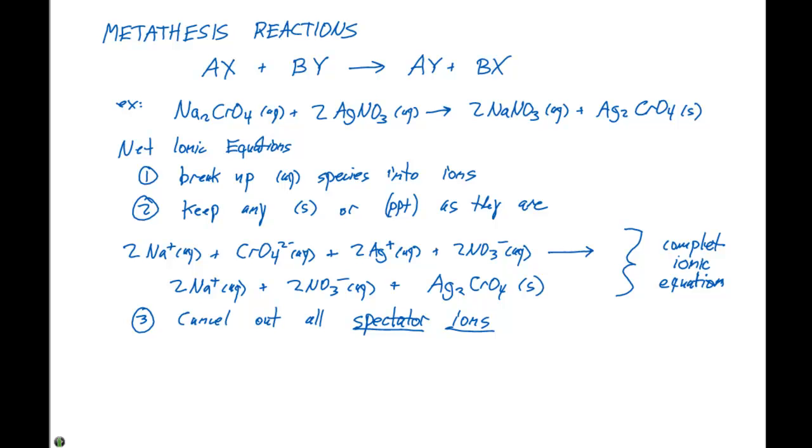So we have two ions, which in this case are gonna be the two sodium plus and the two NO3 minus on each side. So we cancel those out and what we're left with on the reactant side is two silver plus ions in aqueous solution plus CrO4 two minus in aqueous solution giving us Ag2CrO4 solid.